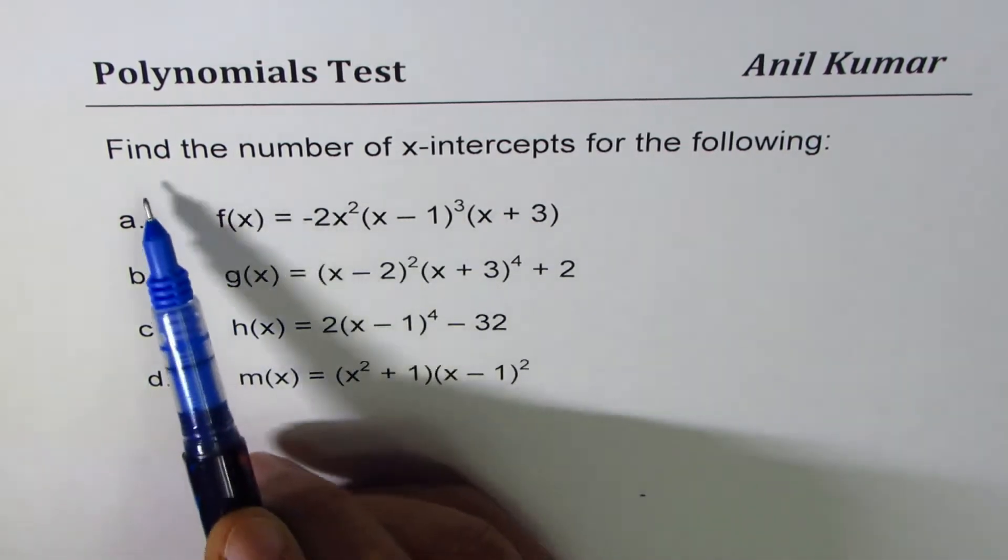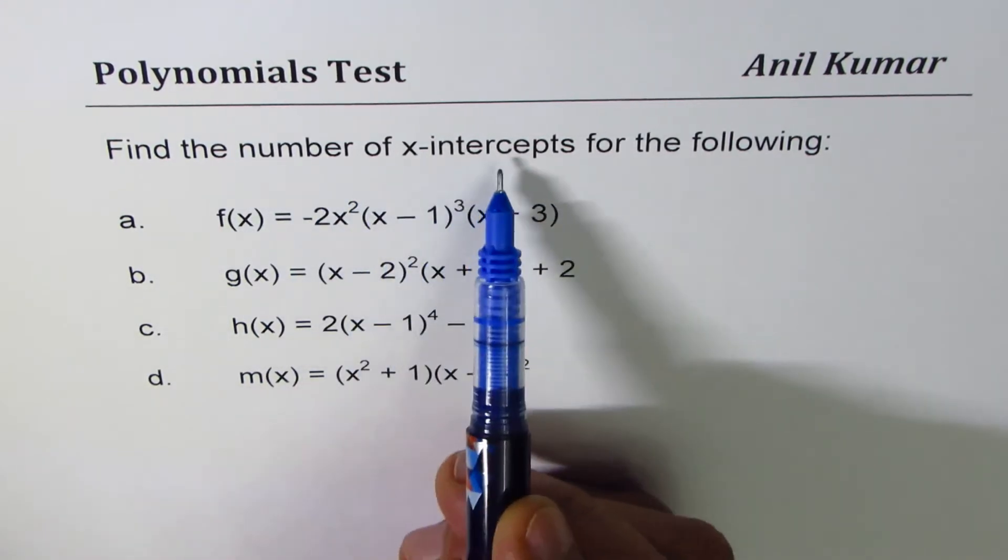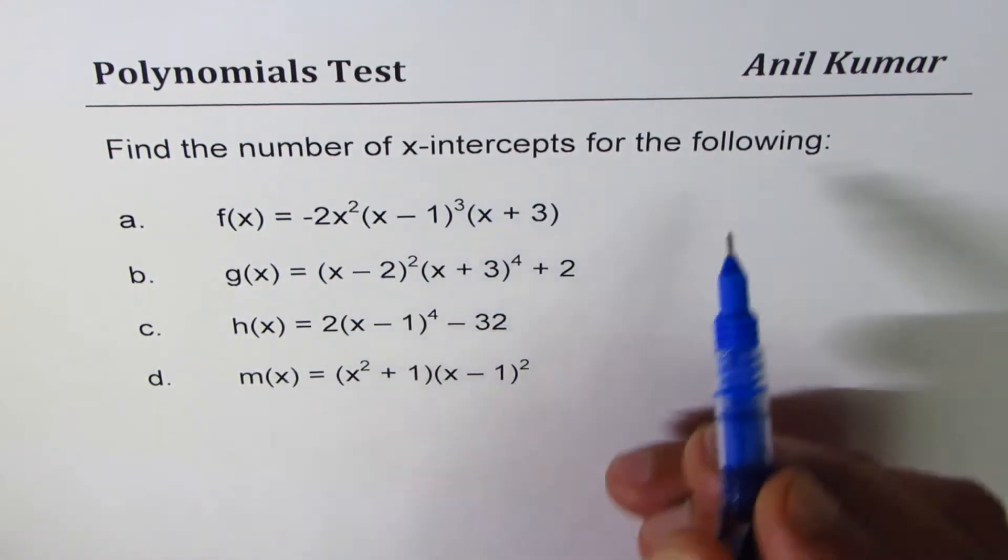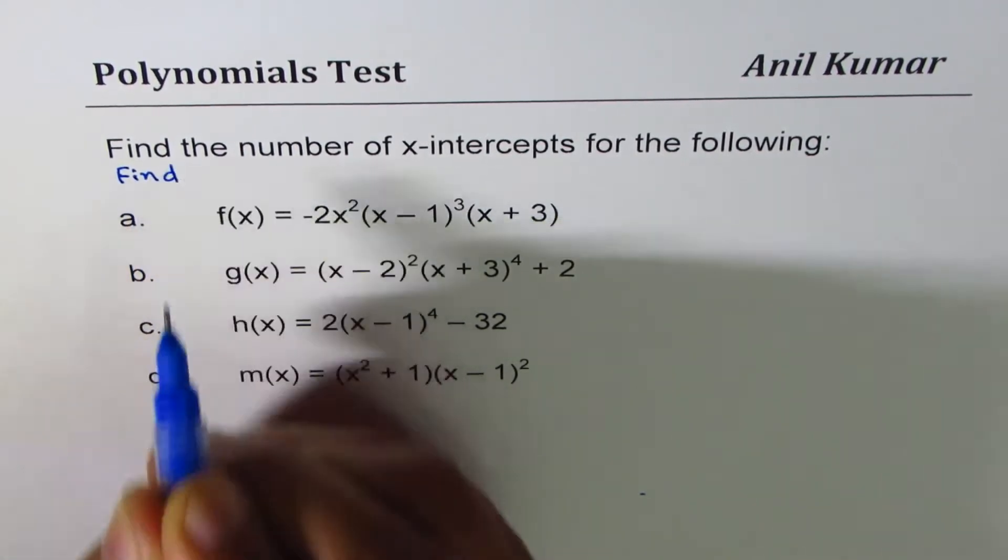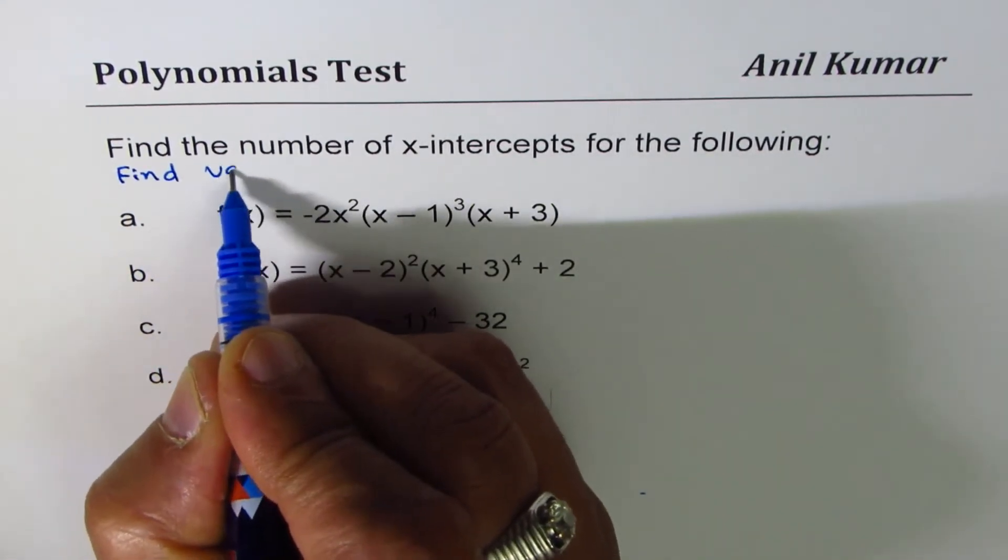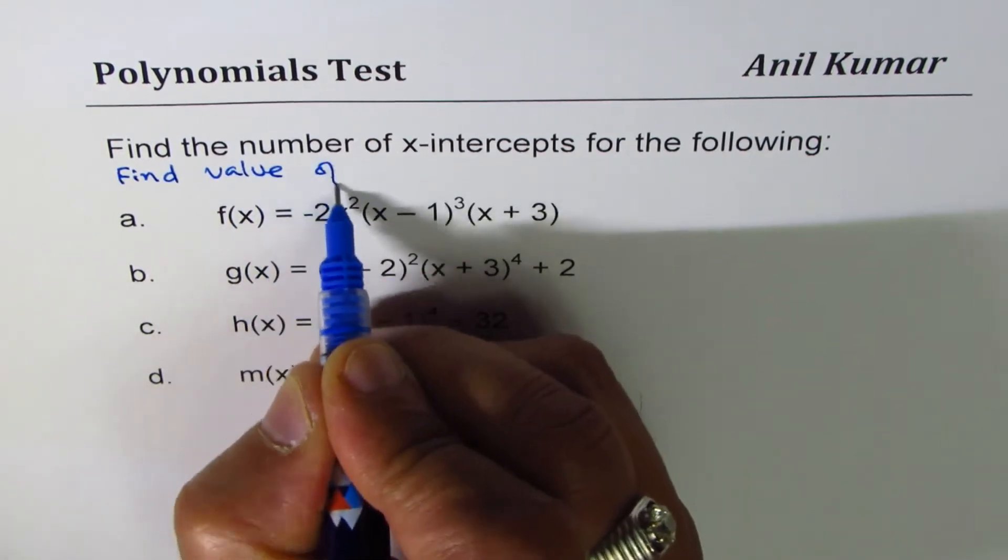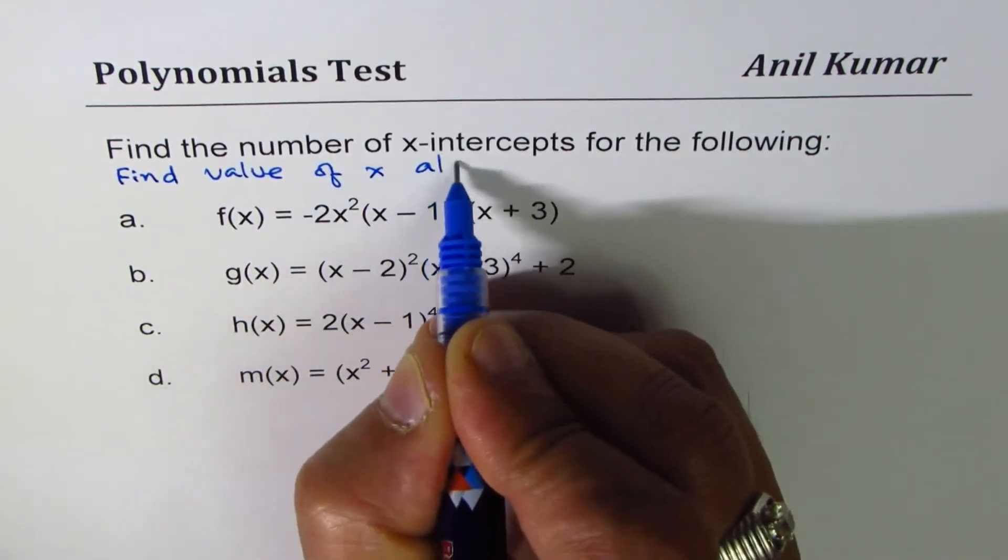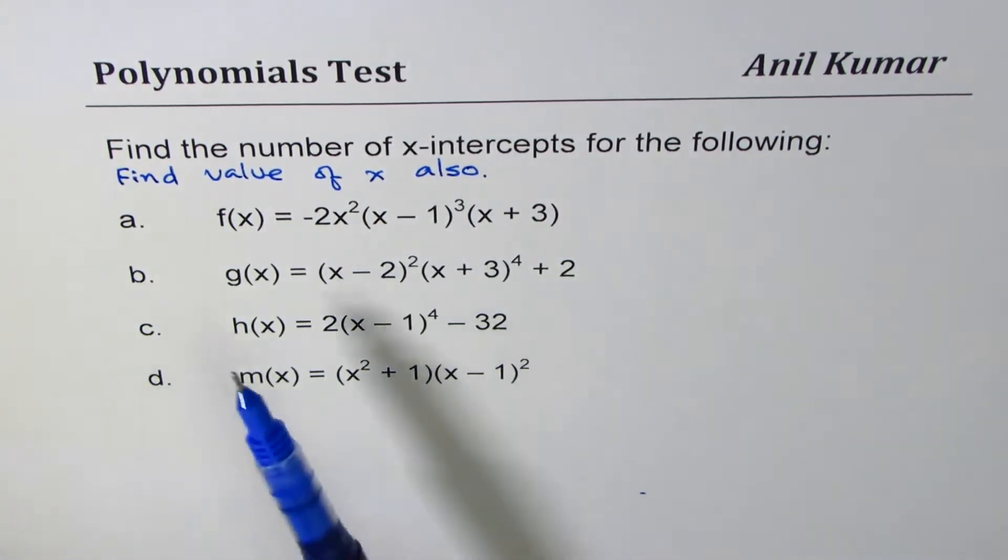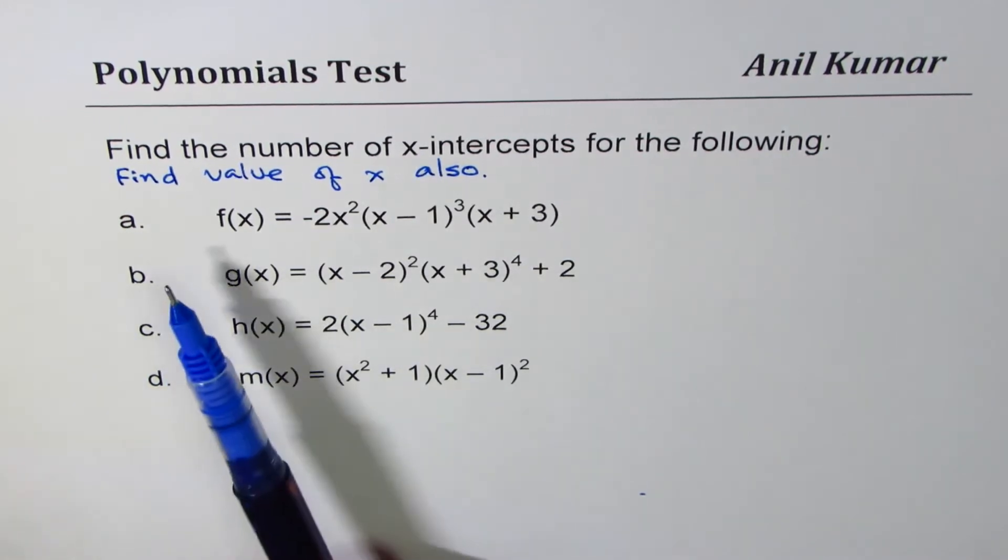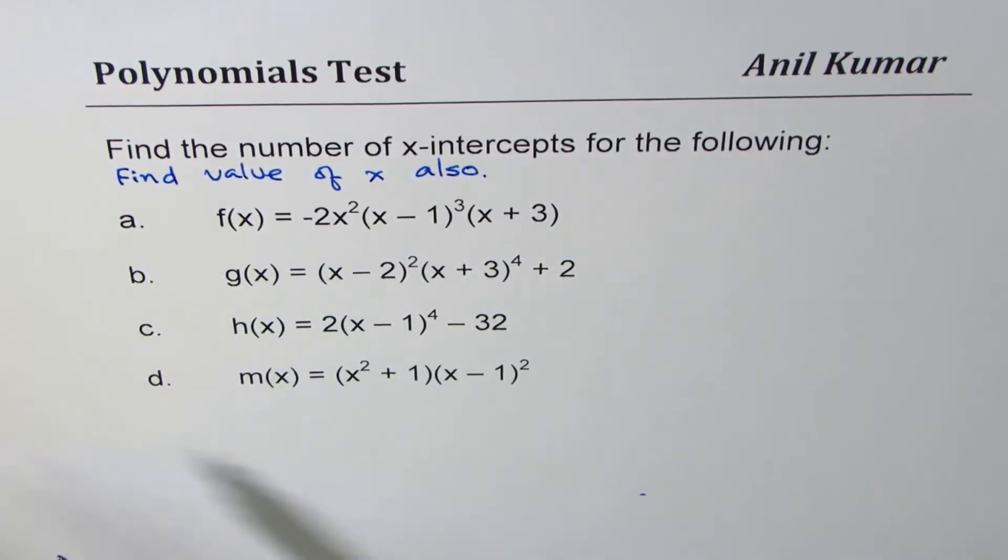The question here is find the number of x-intercepts for the following, and let me also add find value of x also. At which point do we have x-intercept? So we'll take four examples here and try to figure it out. You can also pause the video, copy the question, try it out, and then look into my suggestions.